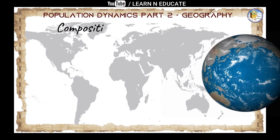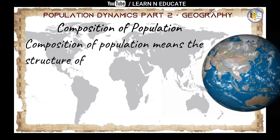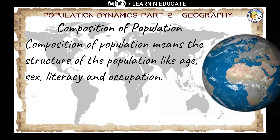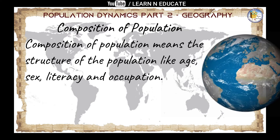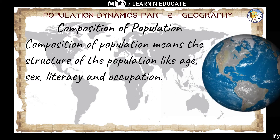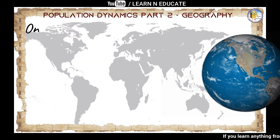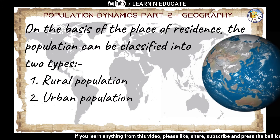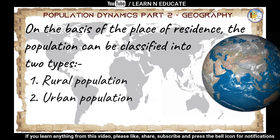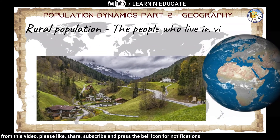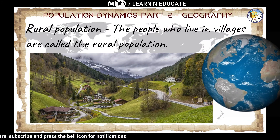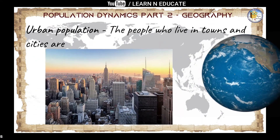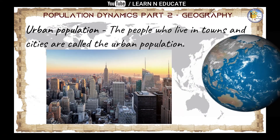Now we come to composition of population. Composition of population means the structure of the population — including age, sex, literacy rate, and occupation of the people. On the basis of place of residence, the population can be classified into two types: rural population — people who live in villages — and urban population — people who live in towns and cities.